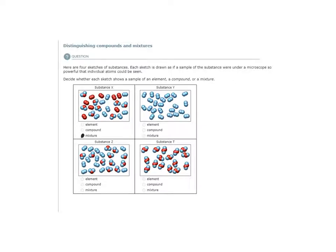Because remember, elements and compounds are pure substances, meaning they are the only things present in that sample — either one atom type, or one compound that you see repeated over and over again.